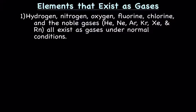We'll start with a quick overview of what elements exist naturally as gases. So hydrogen, nitrogen, oxygen, fluorine, chlorine, and the noble gases which is the group 8A or 18 elements: helium, neon, argon, krypton, xenon, and radon all exist as gases under normal conditions.